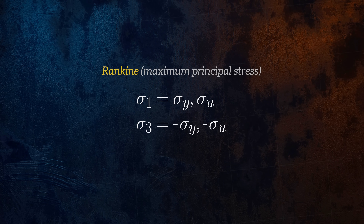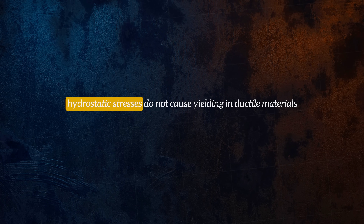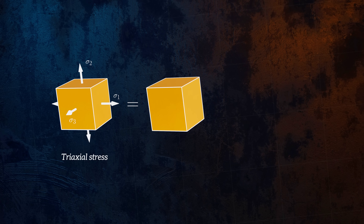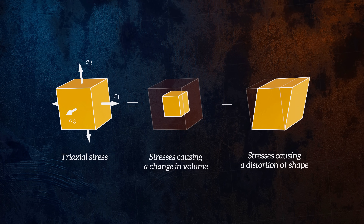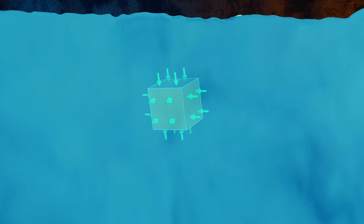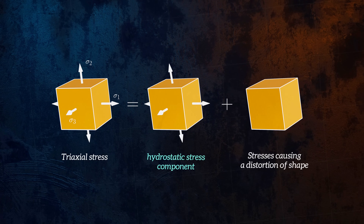Let's look at some better failure theories for ductile materials. Any good failure theory needs to be consistent with experimental observations about how materials fail. There is one key observation that failure theories for ductile materials need to capture, which is the fact that hydrostatic stresses do not cause yielding in ductile materials. A general triaxial stress state can be decomposed into stresses which cause a change in volume and stresses which cause shape distortion. Stresses that cause a change in volume are called hydrostatic stresses. For a hydrostatic stress configuration, the three principal stresses are always equal and there are no shear stresses. For a triaxial stress state, we can calculate the hydrostatic component as the average of the three principal stresses.